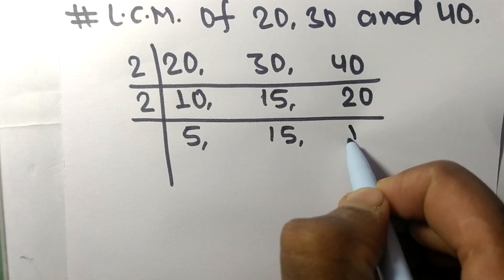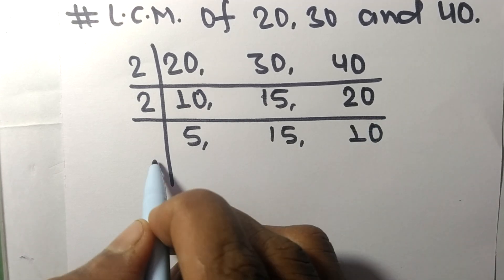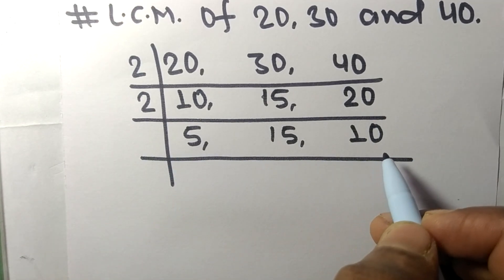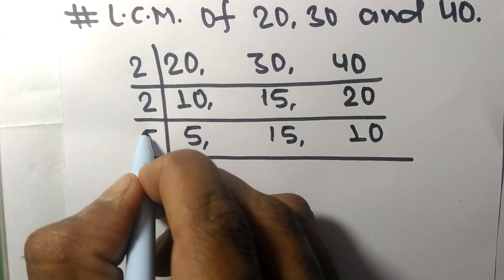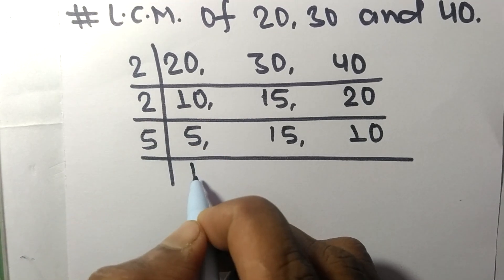Now these all numbers are divisible by 5. 5 times 1 means 5, 5 times 3 means 15, 5 times 2 means 10.